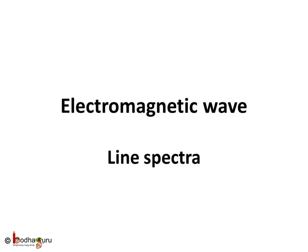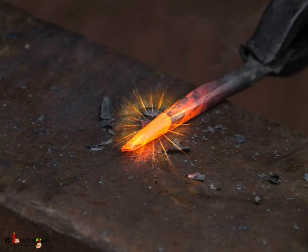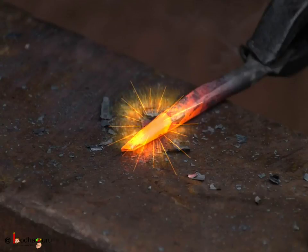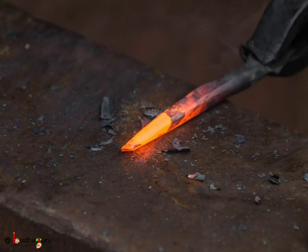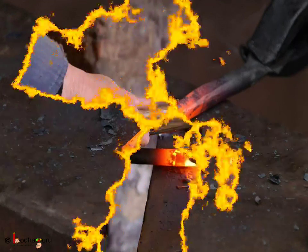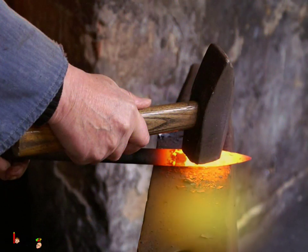Hello everyone. Say an iron rod is heated to very high temperatures. It initially glows red. Red light is produced first because it has lower frequency and high wavelength. As it increases in temperature, the color will change from red to orange to yellow to white.